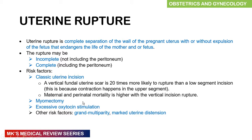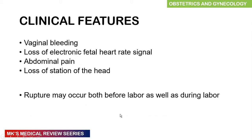Maternal and perinatal mortality is actually higher with vertical incision ruptures. Other risk factors include myomectomy, excessive oxytocin stimulation, grand multiparity, and marked uterine distension.